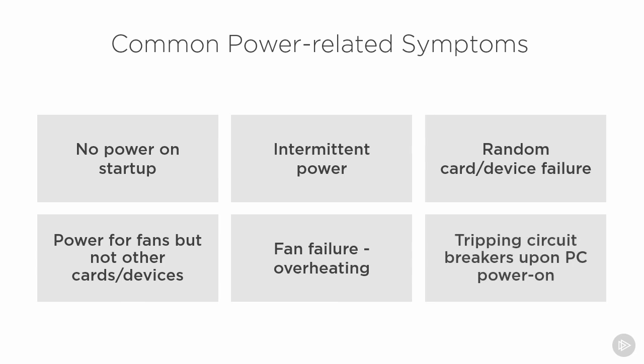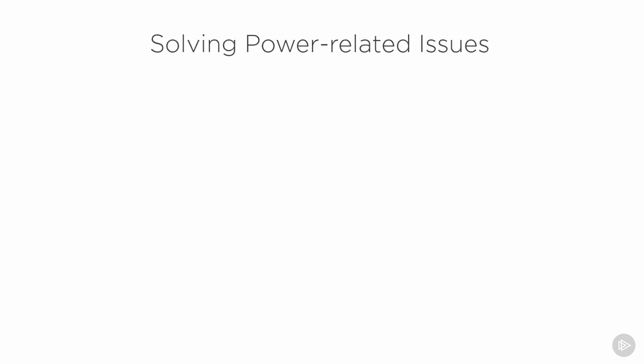Finally, we might have the problem of tripping circuit breakers when we power on PCs or other components with a high power draw, like large storage arrays or even laser printer devices. Tripping a circuit essentially means we are trying to draw too much power. That's something to keep in mind, especially when it comes to the design of a facility that will house a lot of computing equipment in one area.